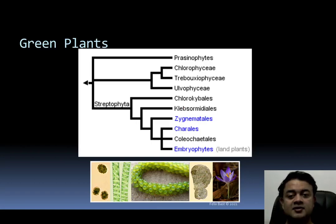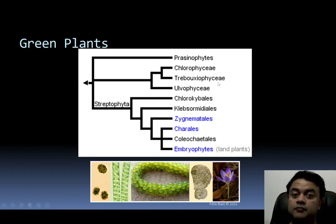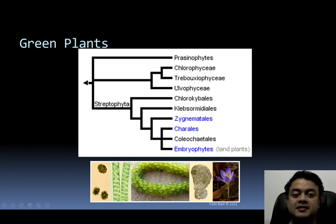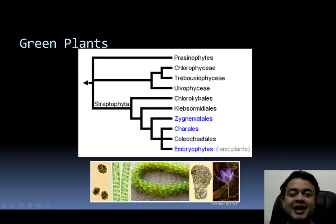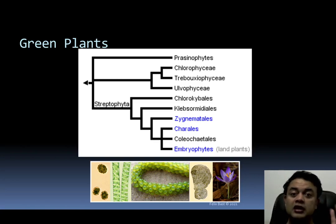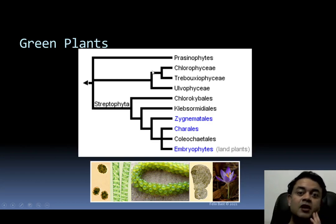Looking at green plants in Viridiplantae, most of the basal groups are algae or chlorophytes. Four groups — Prasinophyceae, Chlorophyceae, Trebouxiophyceae, and Ulvophyceae — are collectively referred to as green algae. Green algae including prasinophytes is not monophyletic. However, if you define green algae as only the UTC clade — Ulvophyceae, Trebouxiophyceae, and Chlorophyceae — then these three groups together form one clade.